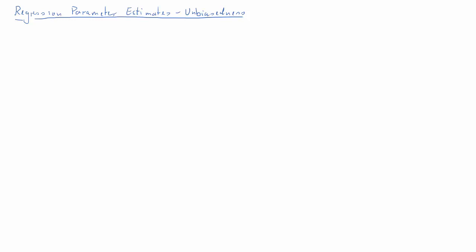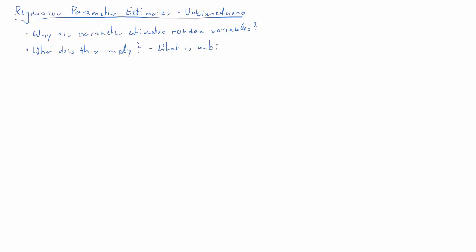In this clip we're going to talk about OLS regression parameter estimates. There are a couple of questions we'll try to answer: why such parameter estimates are random variables, what does that actually imply, what is required for these coefficients to be unbiased, and what does unbiasedness mean.